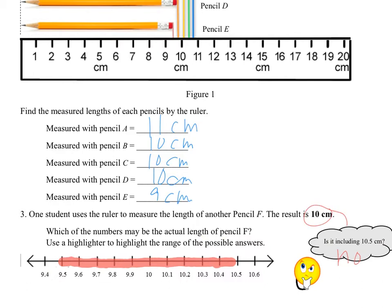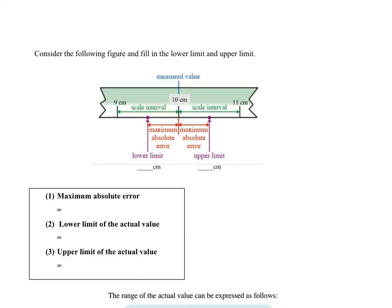So let's turn to the next page and see what we'll do next. So from the previous question, we measured the pencil, which is our 10cm. And right now, we want to find out what is the maximum absolute error for the lower one and also the upper one here.